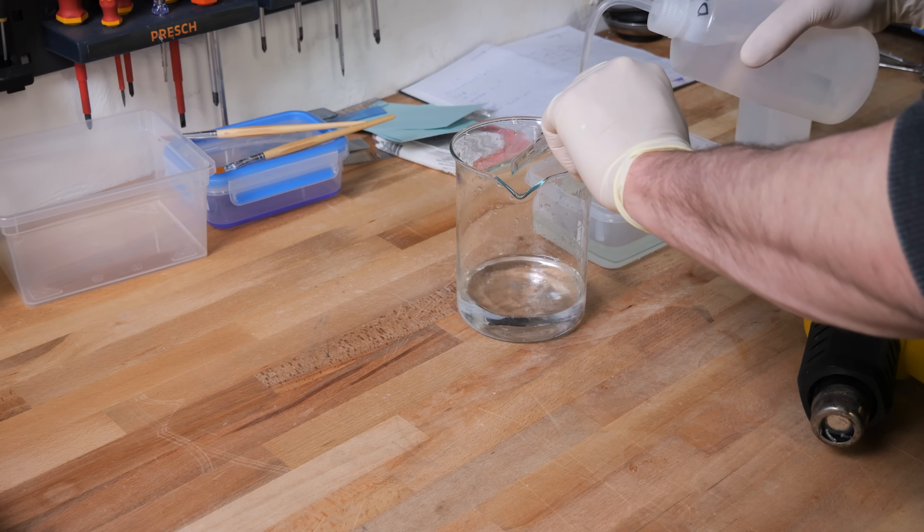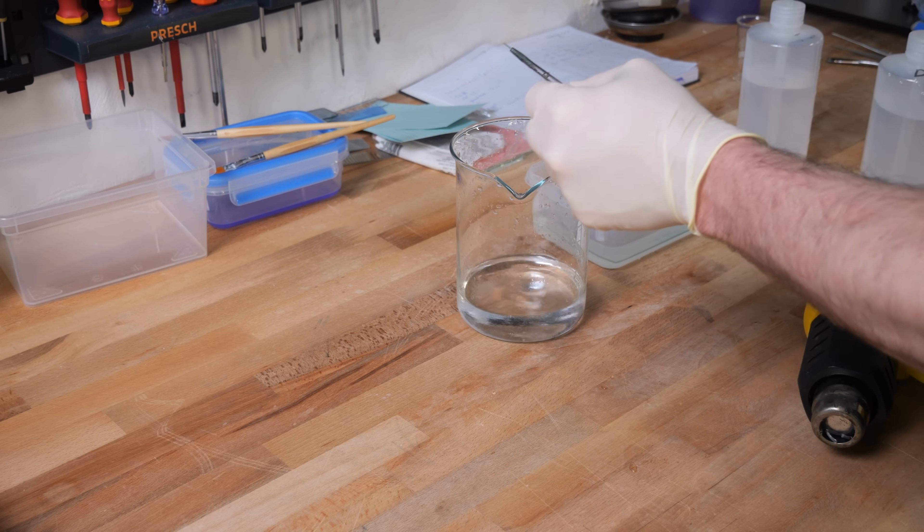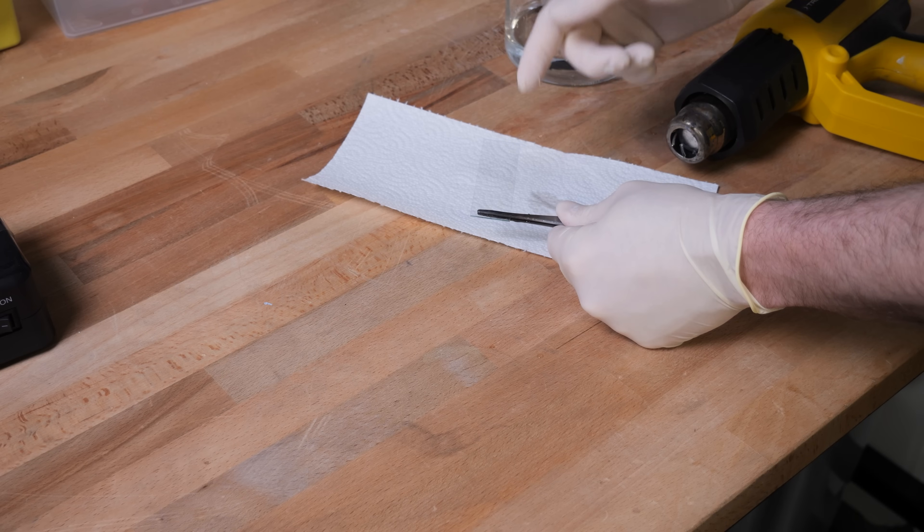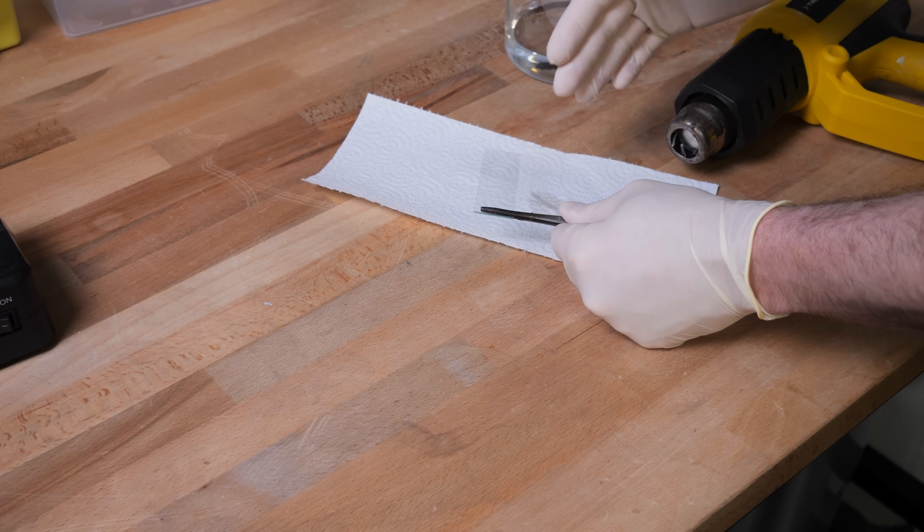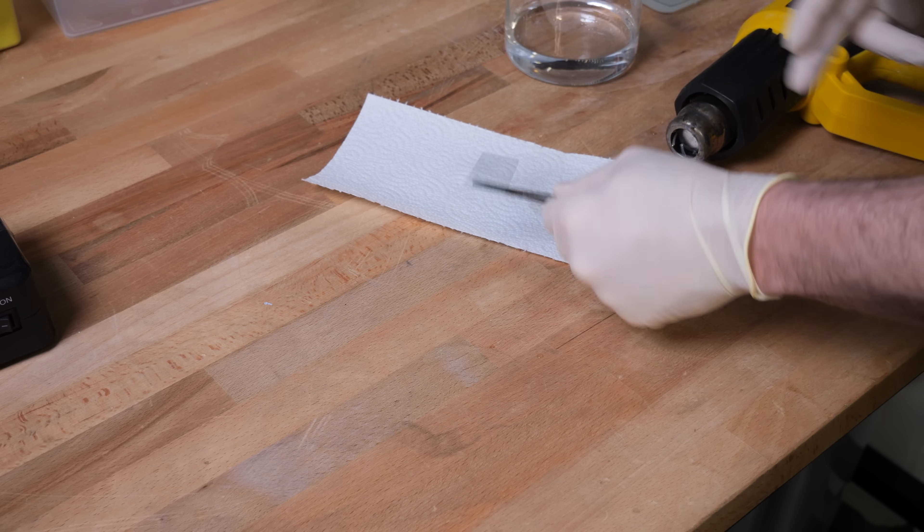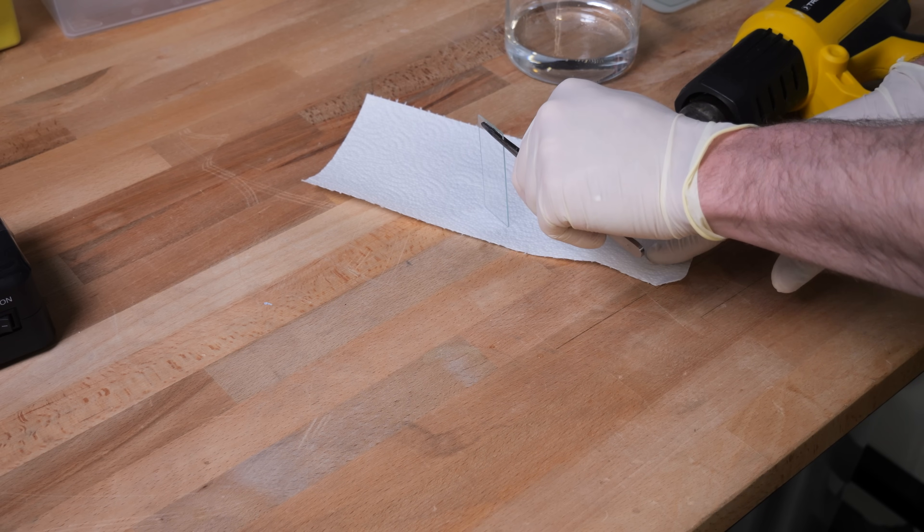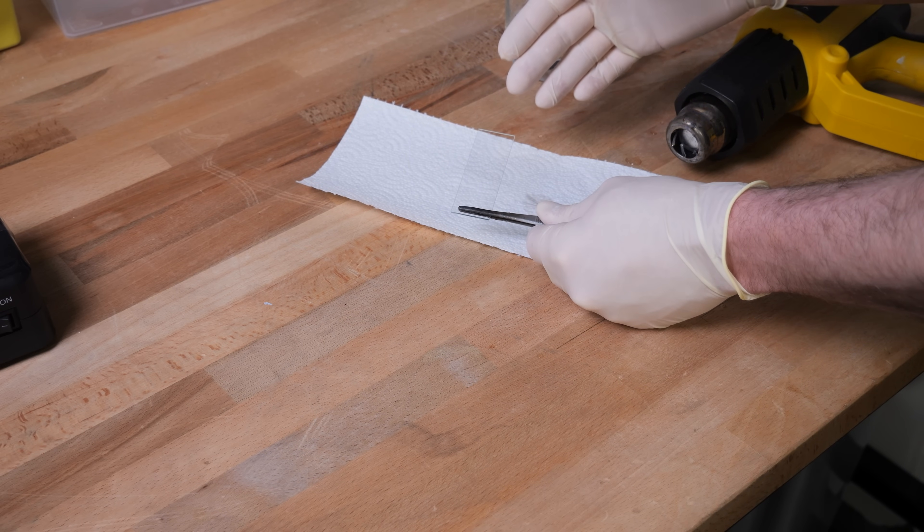After rinsing the microscope slides with distilled water I dry them using a hot air gun. When drying the microscope slides with a hot air gun I try to first push most of the water down to the edge and soak it up with a paper towel. I want as little water as possible evaporating on the surface and leaving any residue.